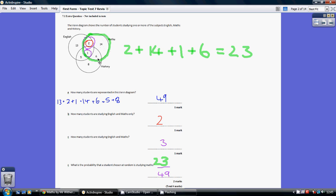So the 14, the 2, the 1, and the 6 - that is 23 divided by the total number of students. That is all the numbers here. That is what we worked out in part A, that is 49. So our answer, given as a fraction, is 23 over 49.